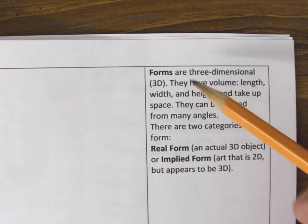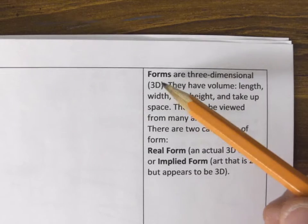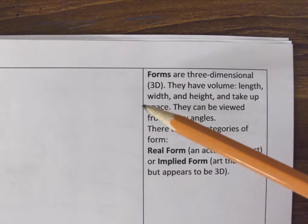I'm guessing in terms of elements is form. The definition for form is that it's 3D, okay? Remember, shapes had an outline to them, but they were 2D. They were flat.